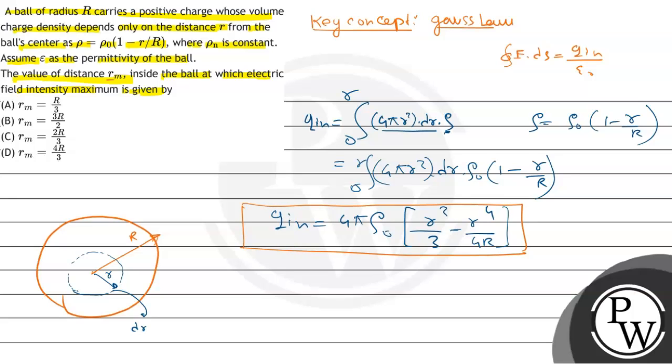Now from this equation, E·dS equals q inside by ε₀. Putting Gauss law again, E equals q_in by ε₀ times 1 by the area of the elementary shell, that is 4πr².